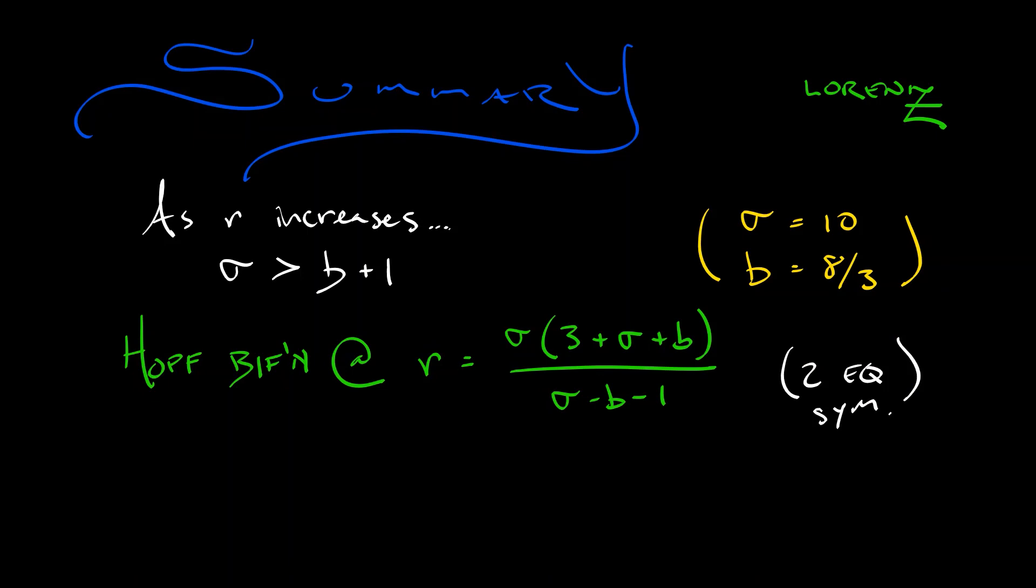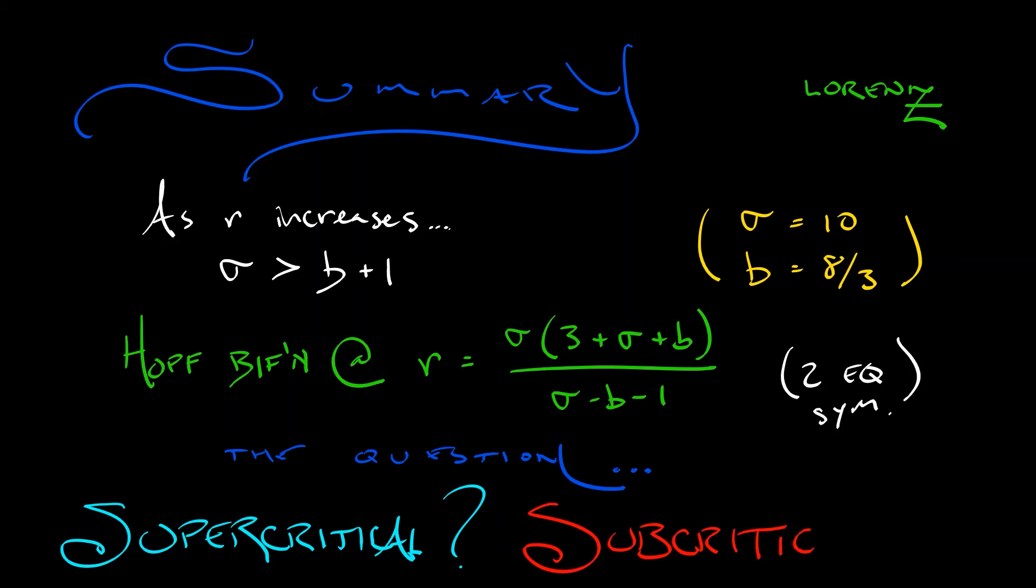Not really. I mean, it's a single Hopf bifurcation, but it's happening at these two points at the same parameter value because the system is kind of symmetric. Now, the question. What type of Hopf bifurcation is it? Is it supercritical? Is it subcritical? How would we figure that out? Well, it's not so easy. But nice guy that I am, I'm going to tell you. It's subcritical.